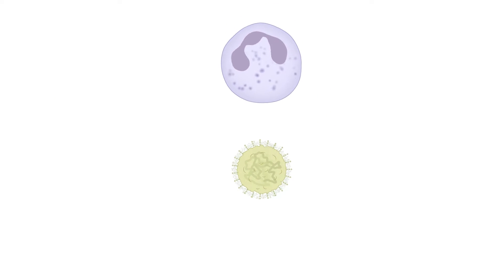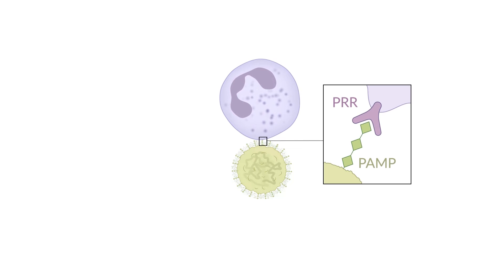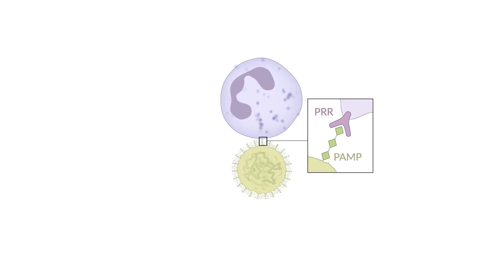The macrophages and granulocytes attracted by the inflammation recognize the PAMPs of pathogens through pattern recognition receptors, in short, PRR. The granulocytes then secrete toxic substances to fight against the invading bacteria. The macrophages engulf the bacteria, or in other words, phagocytose them.